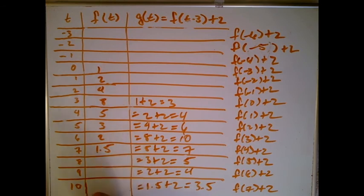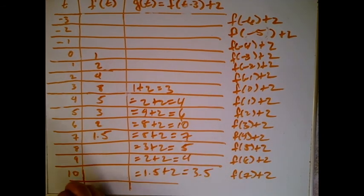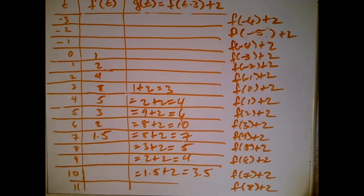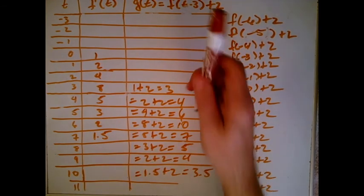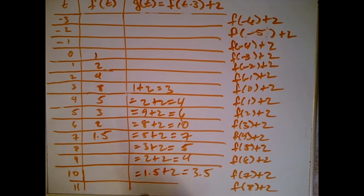If I try to plug in t = 11, I'd need f(8) + 2, but I don't have f of 8, so this is as much data as I can fill in. You can see where the data came from: all the values got shifted down three spots in the table, and then I added two to each. That's how the table works. Now we're going to go over to Desmos and see what happened to the graphs.